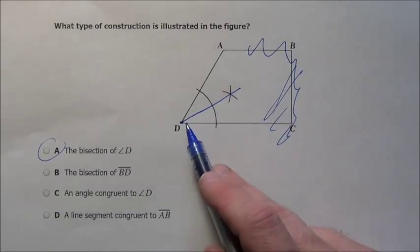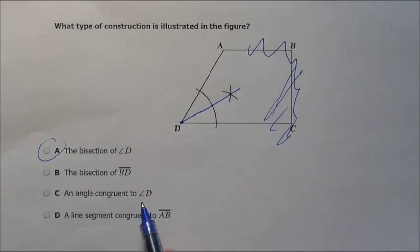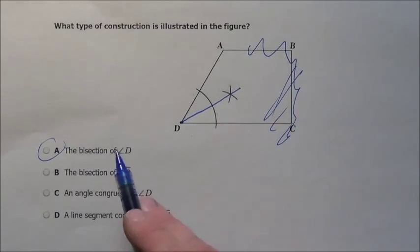It's not the bisection of some line segment BD, nor an angle congruent to angle D, nor line segment congruent to AB. Those make no sense.